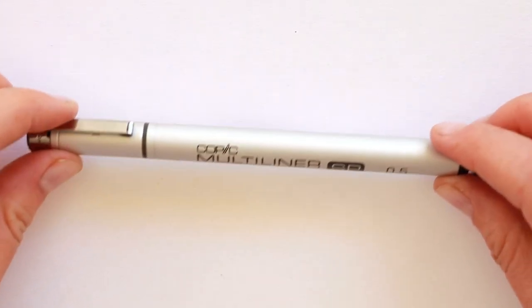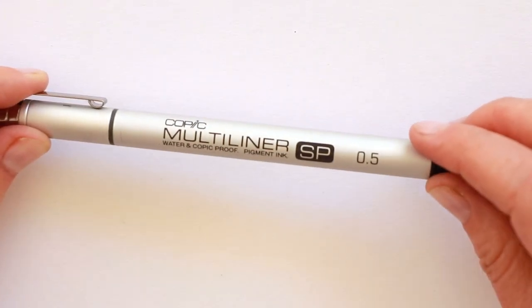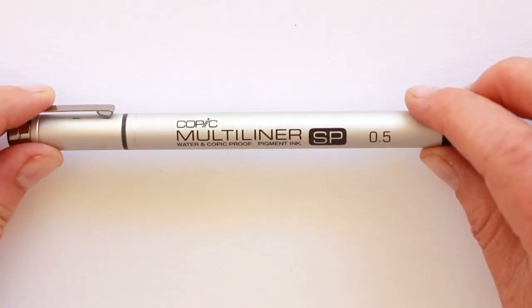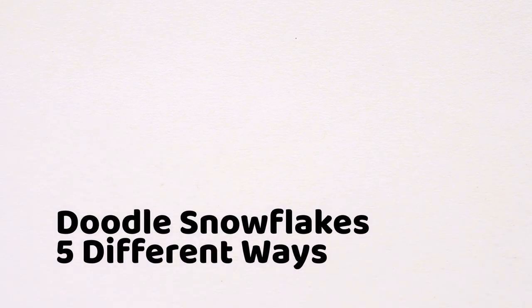Here I'm using a black felt tip pen. This is a multi-liner 0.5 size but you can use any marker or pen that you like or even pencils. It doesn't really matter. Here I'll show you how to draw a simple doodle cute snowflake five different ways.